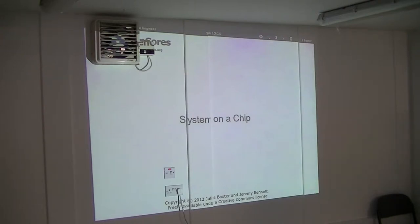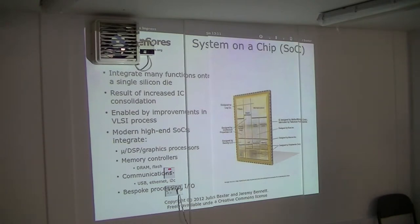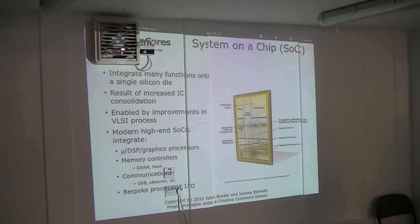A system on chip is essentially a thing with lots of functionality embedded in one design — one chip. So you'd have components like the UART we just worked on, which would only be one component of a bigger system. You'd have many bits providing overall a lot of functionality.